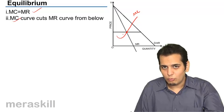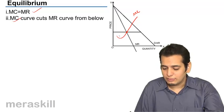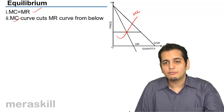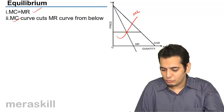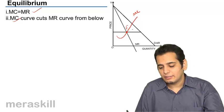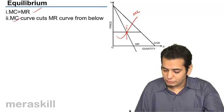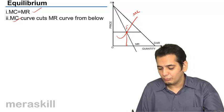At this point, we can also see that MC is cutting MR from below, that is when the MC curve is rising. So both the conditions get satisfied at this point. So let me name this point as point E because this becomes the point of equilibrium.